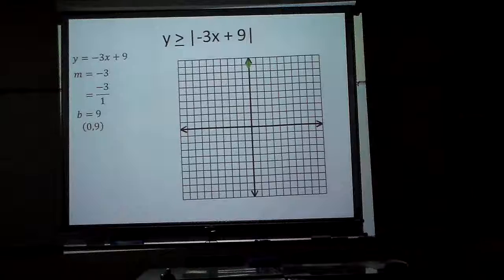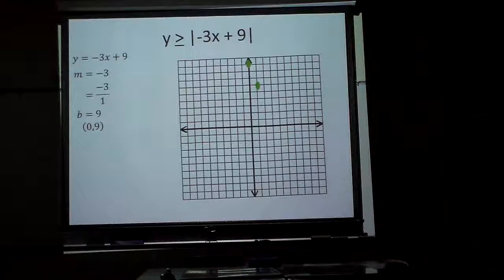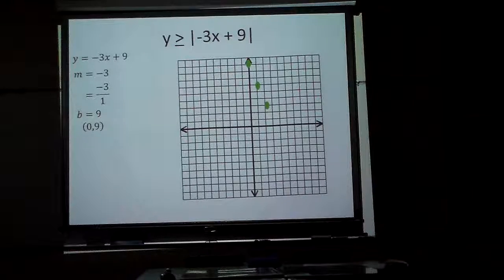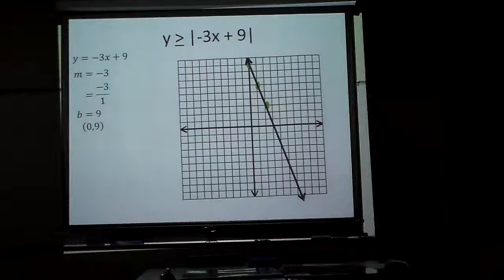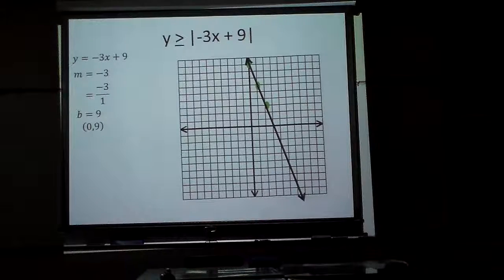So I'm going to put a dot up there at 9, go down 3 over 1, and now then my question is, look, it's got a bar, so that means it's going to be a solid line. So I know I have that particular graph right there.